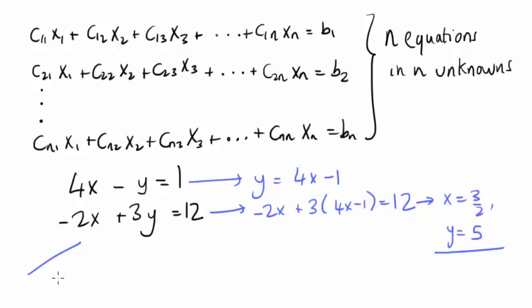If the lines are parallel and distinct, then there'll be no solutions, because there's no points that lie on both lines. And if the two equations represent the same line, then there'll be an infinite number of solutions.